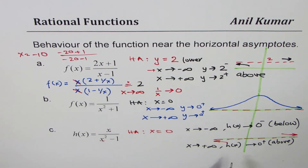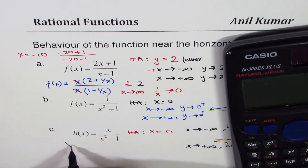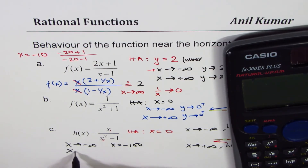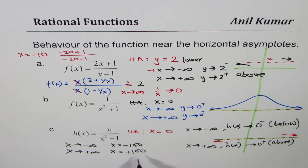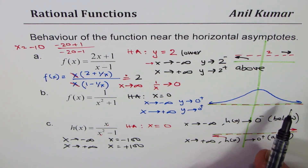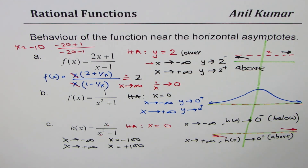So what we have learned here is you could use a calculator to calculate values. When x is approaching negative infinity, put x equals to minus 100. When x approaches positive infinity, put x equals to positive 100. If you get a value higher than the asymptote, you are approaching from above. If you get a value lower than the horizontal asymptote, you are approaching from below. That is the basis for answering these questions. Thanks for watching and all the best.